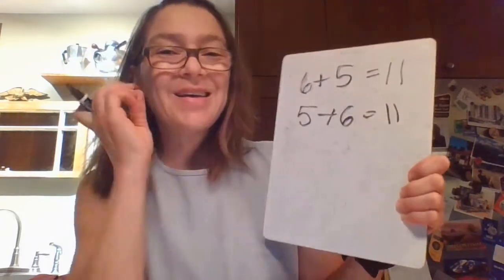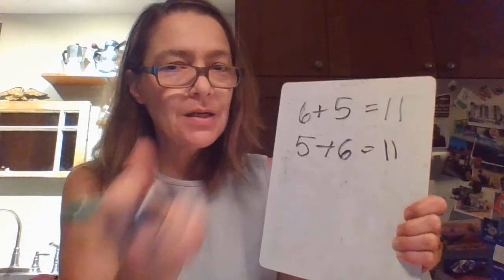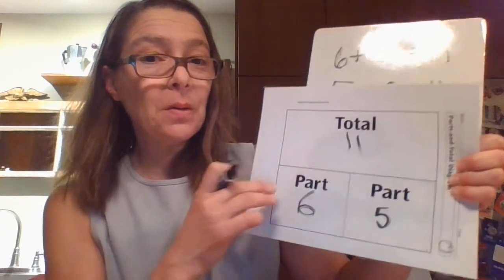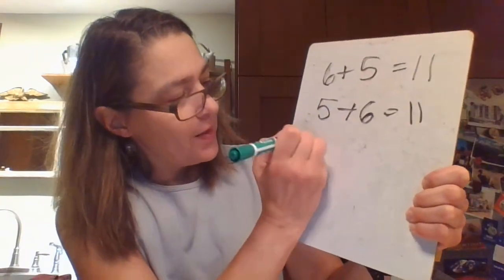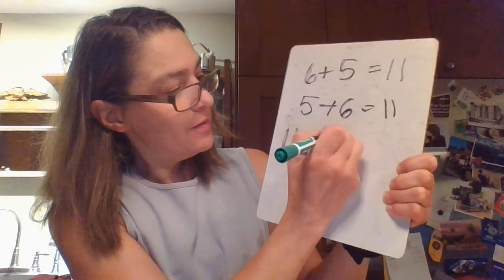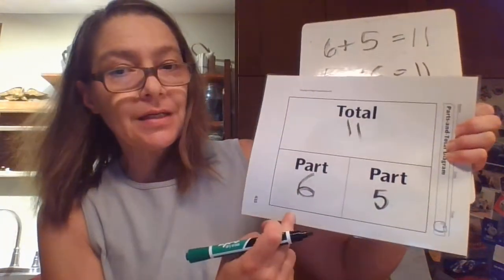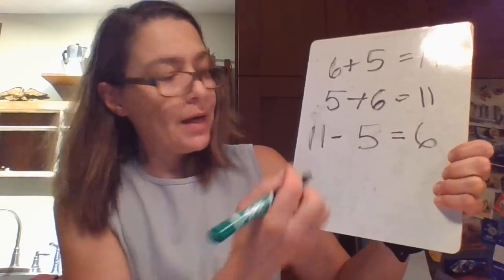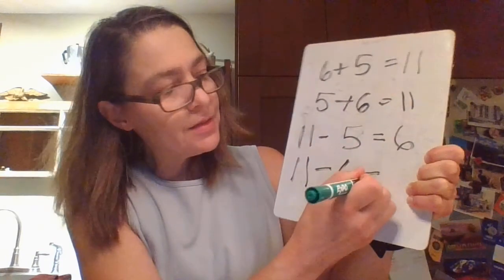Now we're going to do the subtraction. This part might be tricky at first, but once you get the hang of it you'll be really good at it. The total is 11 — the highest value is the total of all the numbers shown. So you have 11 minus one of the parts: 11 minus 5 equals 6. Then do it the other way: 11 minus 6 equals 5.